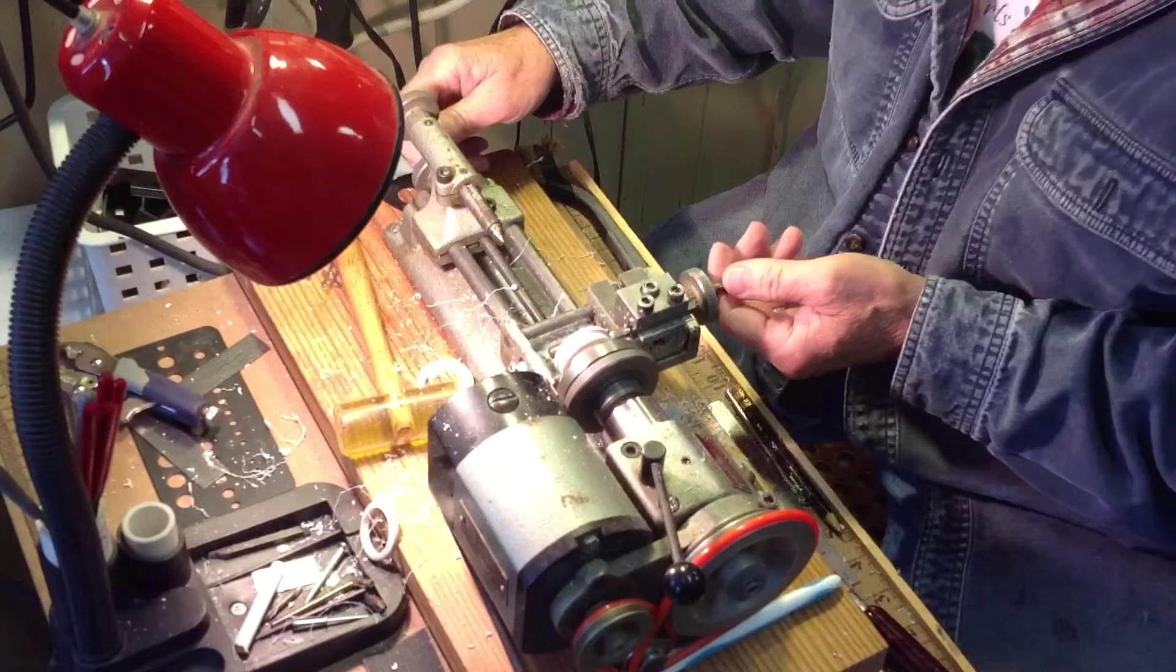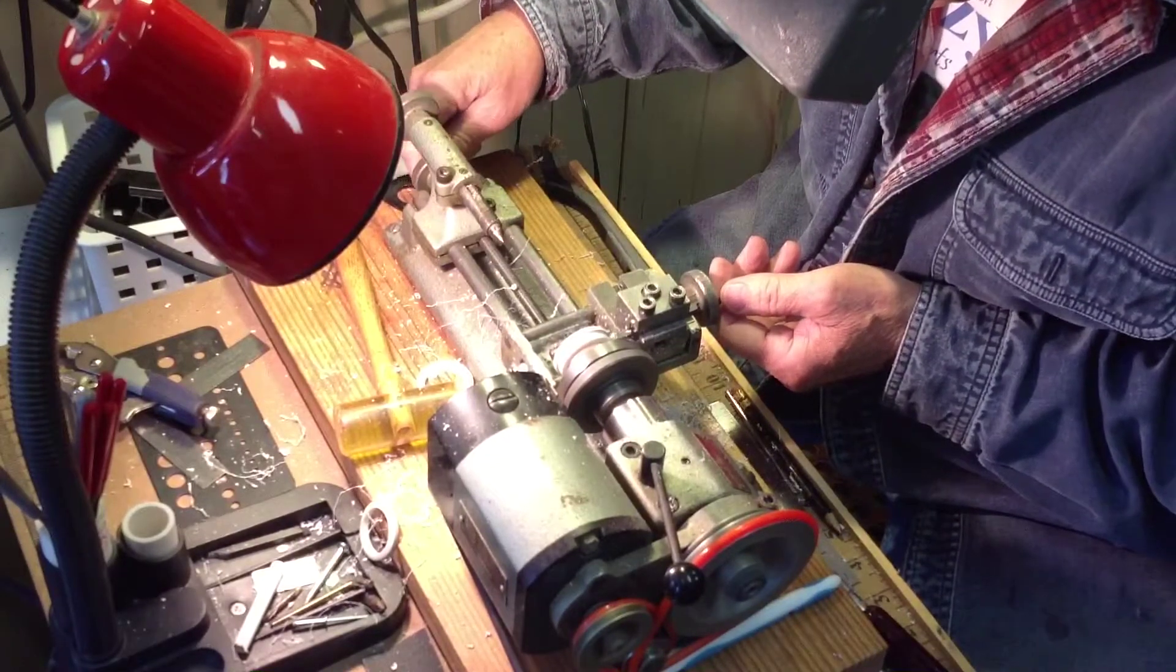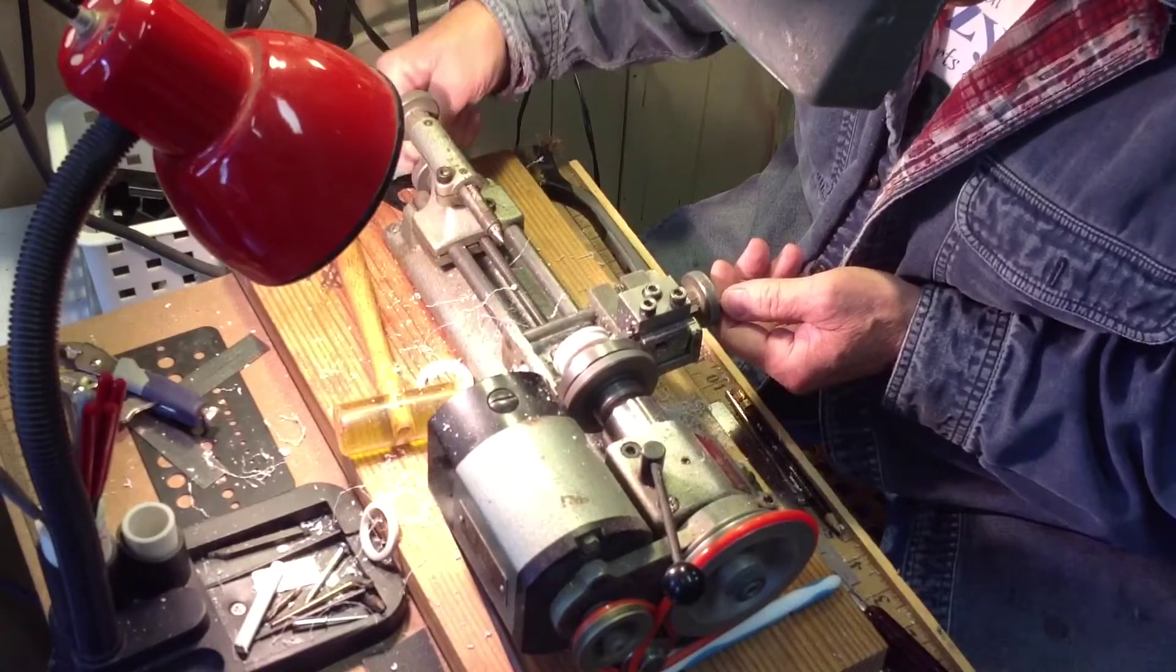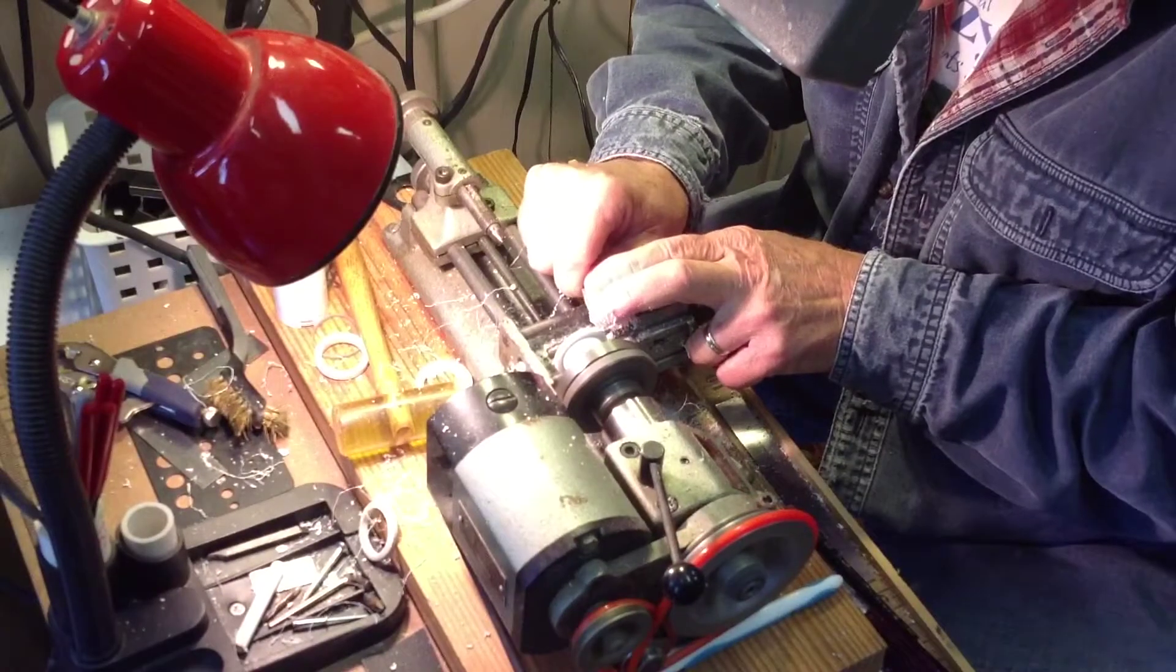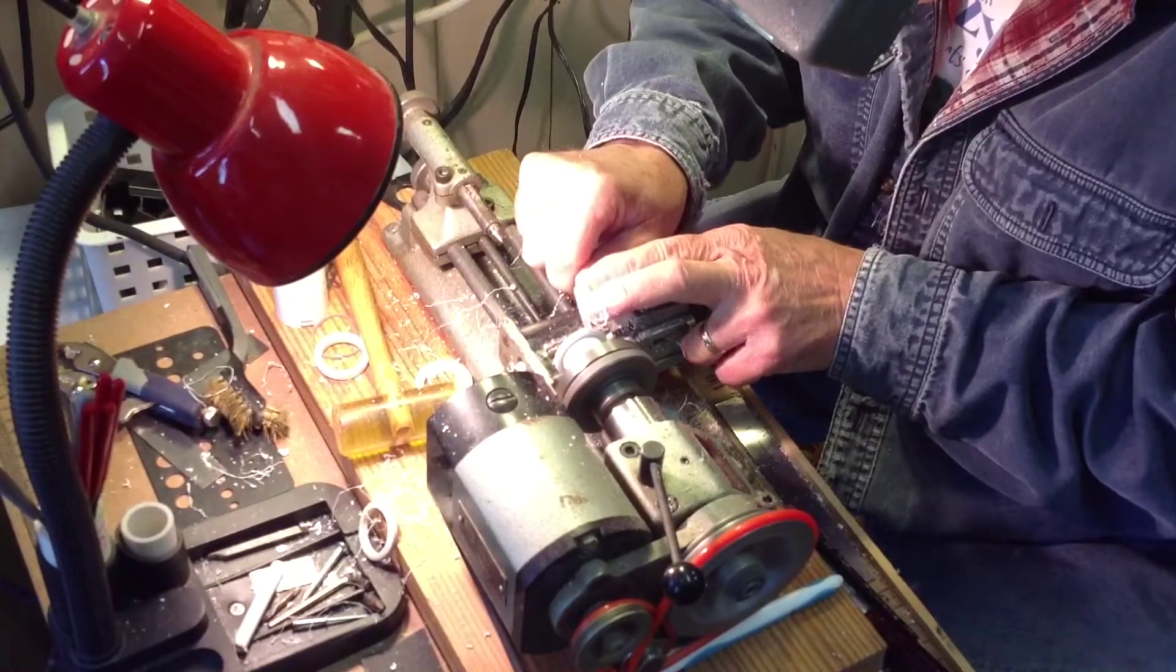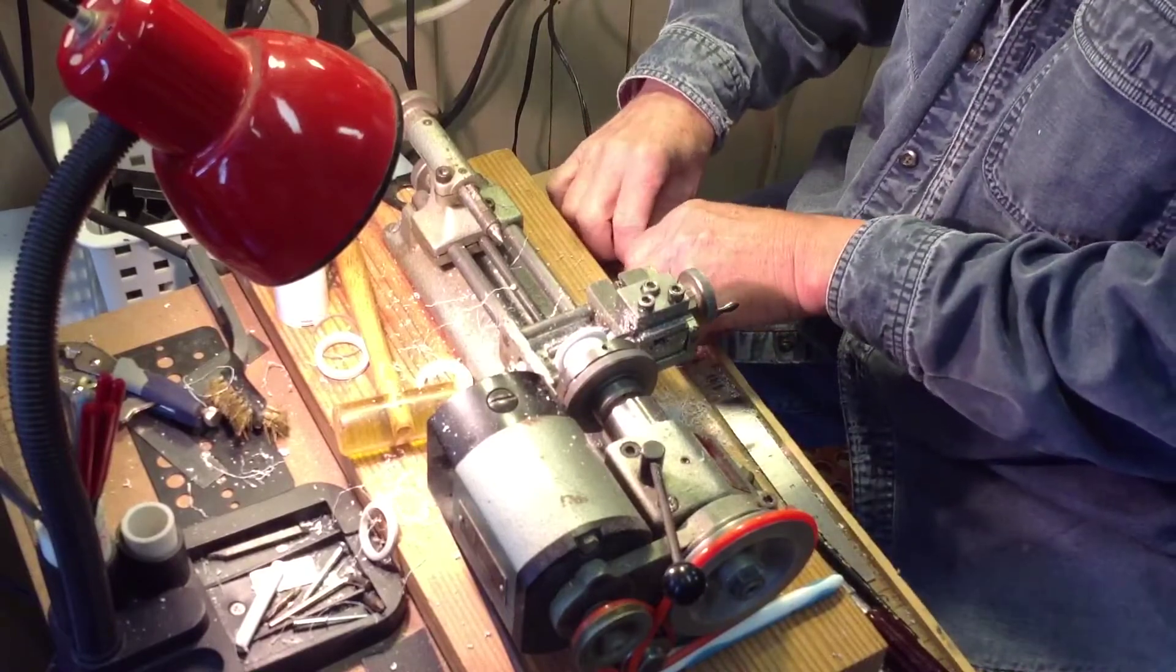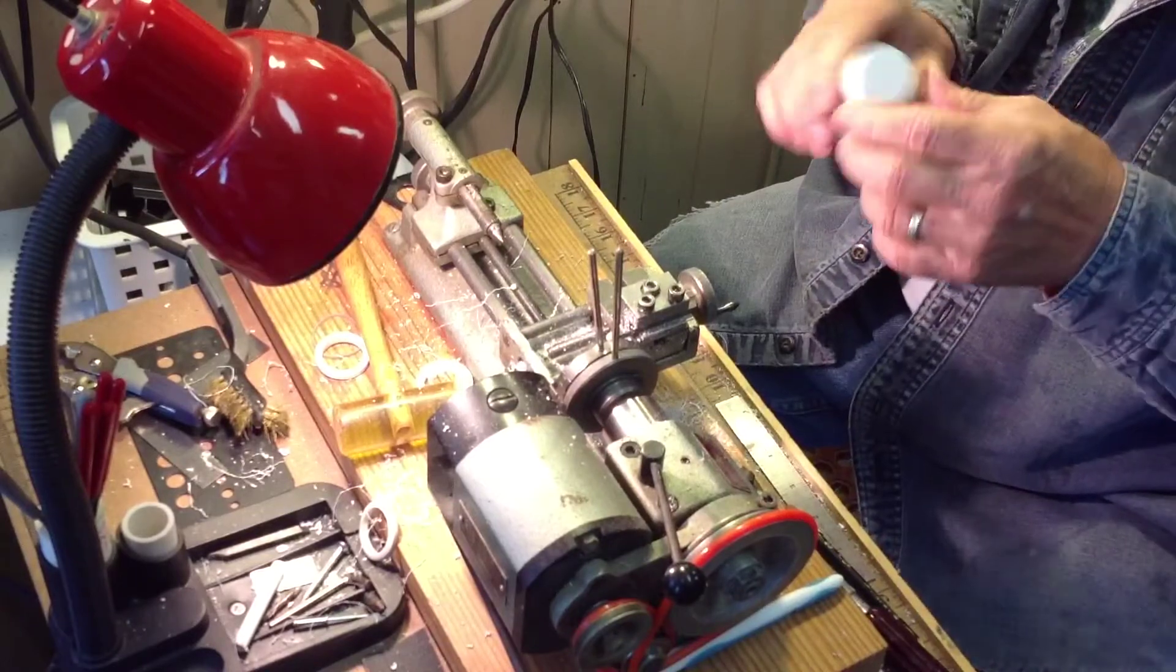We'll use a belt sander and a lathe to do that. We'll finish up the job on the lathe. Here I'm using a needle file to do the finishing touches, and we've got a pretty good fit there.